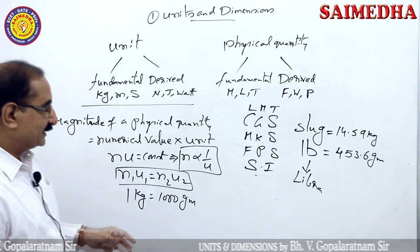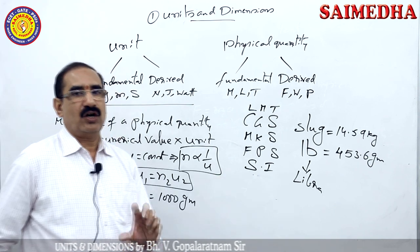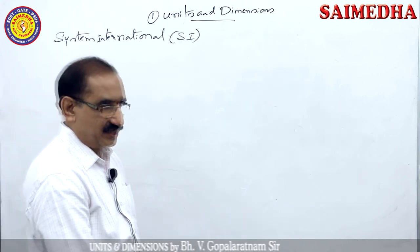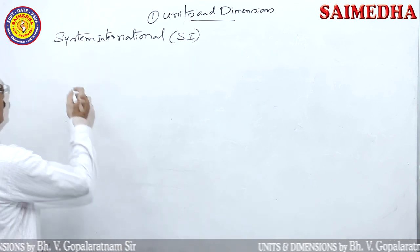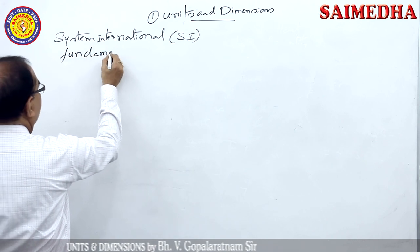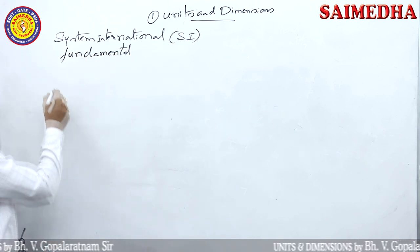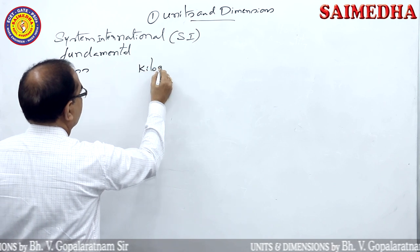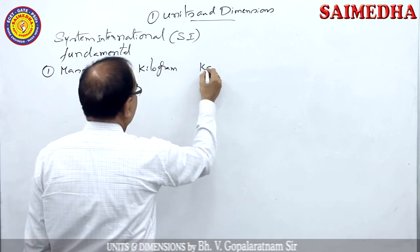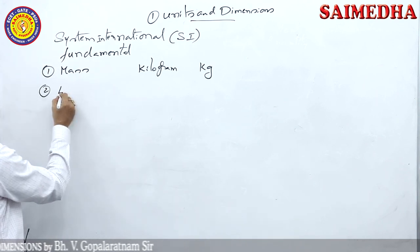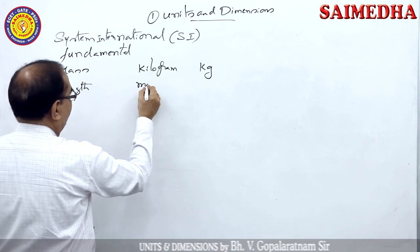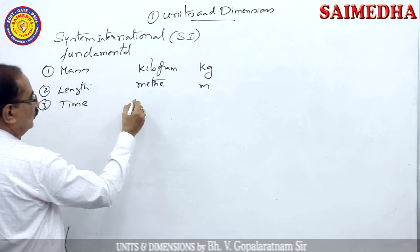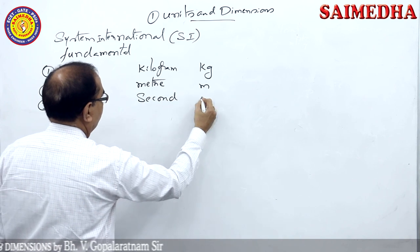The SI system contains seven fundamental physical quantities. The first is mass — unit: kilogram, symbol kg. The second is length — unit: meter, symbol m. The third is time — unit: second, symbol s.